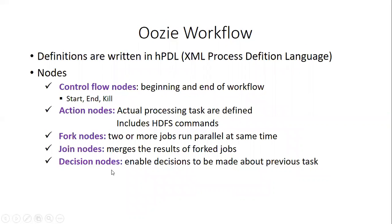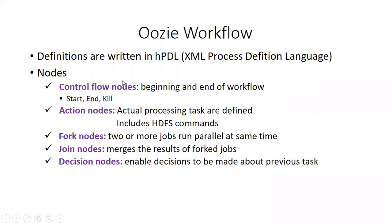Decision node means to decide whether to proceed further or not, based on some values — true or false. If true, you can proceed; if false, you can end it there. In those cases, you use the decision node to enable a decision to be made about the previous task.